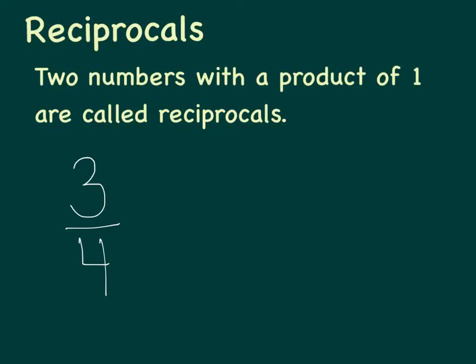you need to be thinking to yourself, what number can I multiply by three-fourths to get an answer of one? Try a couple different things and see what you have to multiply by three-fourths to get an answer of one. If you're stuck, think about what we did with simplify before you multiply — see if that helps you.